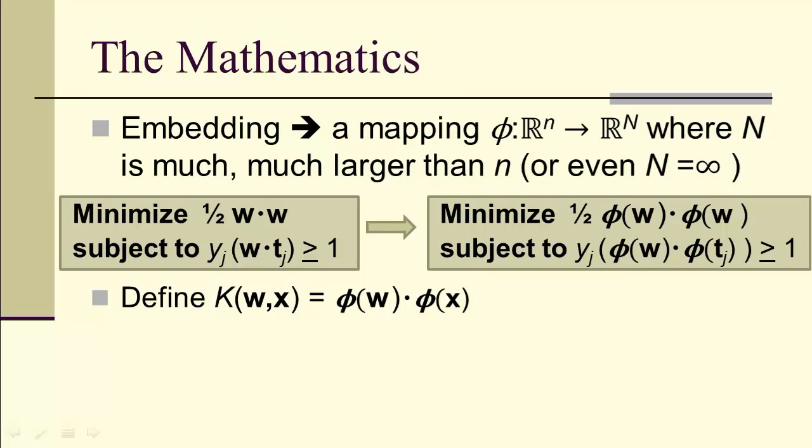Minimizing 1/2 w dot w will be projected into the much, much larger space into minimizing 1/2 phi(w) dot phi(w). The boundary condition constraint, likewise, is going to be y_j phi(w) dot phi(t_j) greater than or equal to 1.